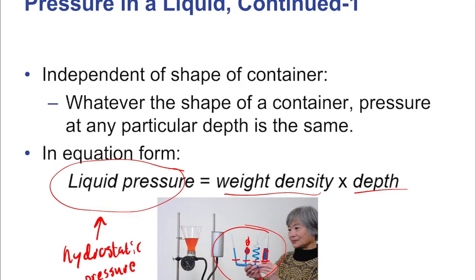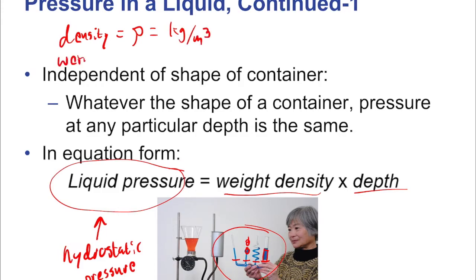This is a very useful equation because it tells us how to calculate pressure at a particular depth — you just need to know the weight density and the depth. The weight density is the density of the fluid times gravity times depth. Density is typically written as the Greek letter rho in kilograms per cubic meter. Weight density is rho times g, because it's a weight — we need gravitational acceleration, making it planet-specific, whereas density is more universal. Weight density has units of Newtons per cubic meter.